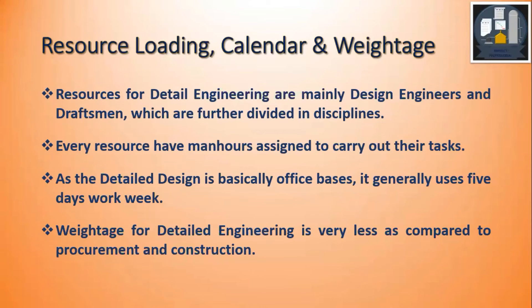Detailed engineering is man-hour based — each deliverable requires a certain number of man hours to be produced. Engineers or draftsmen are assigned certain deliverables, and based on those man hours, each department or design engineer has a total number of man hours to carry out their tasks. Each deliverable has the man hours required to complete it, and each design engineer and draftsman has a number of deliverables assigned to them, giving a total number of man hours for those engineers, discipline engineers, draftsmen, etc.